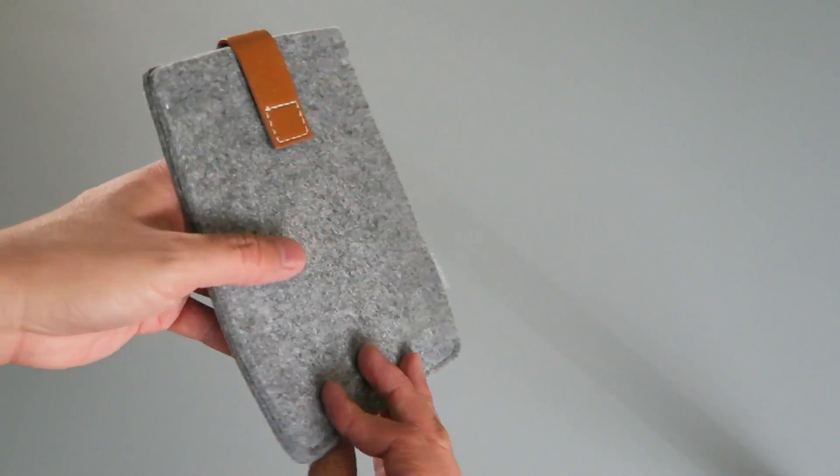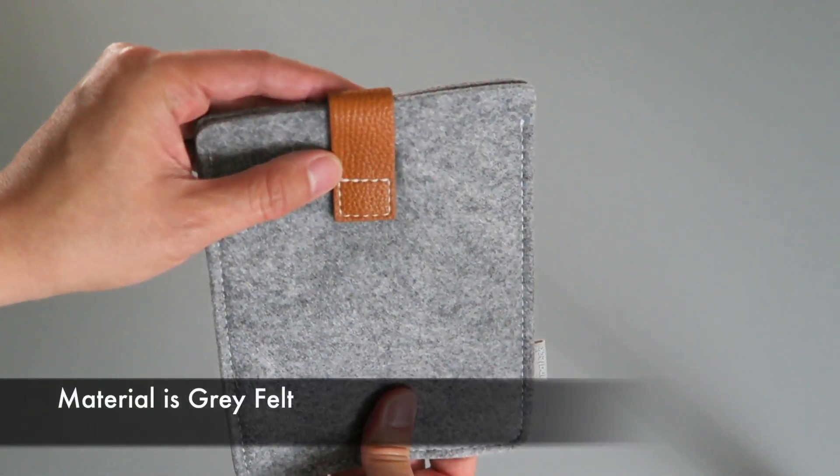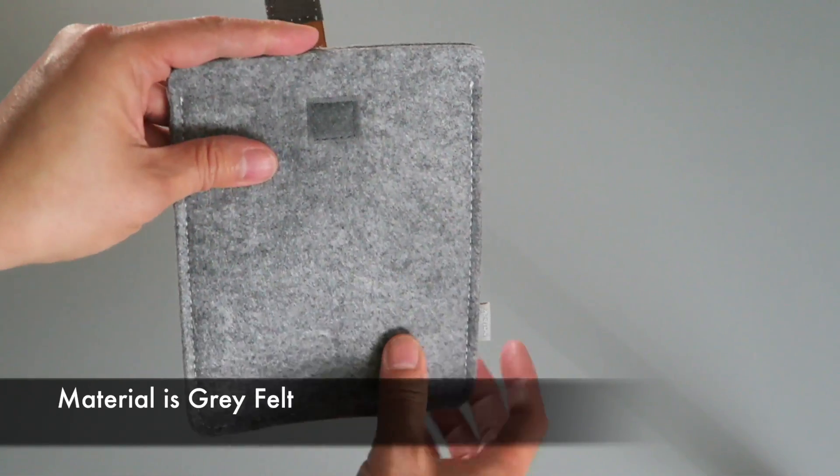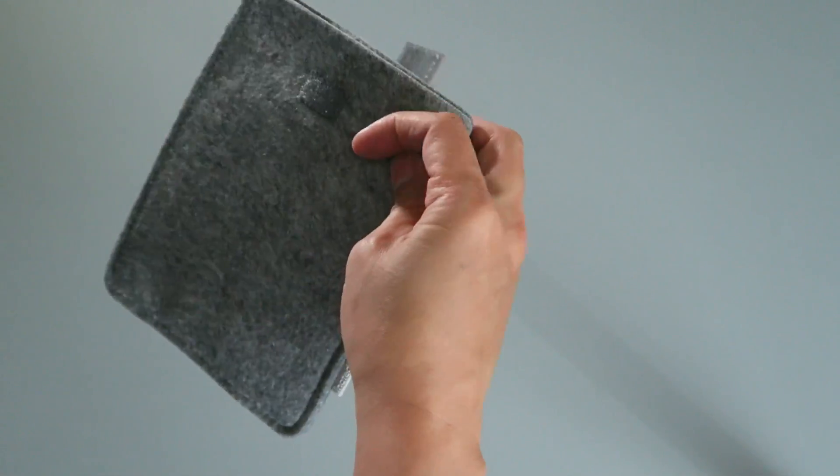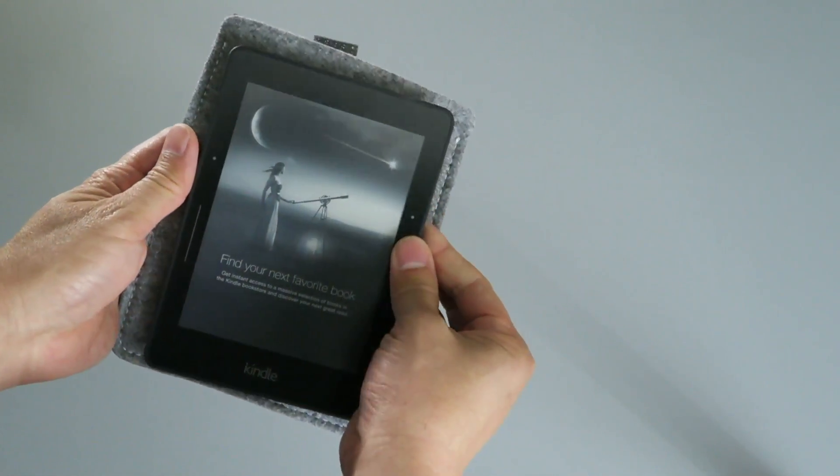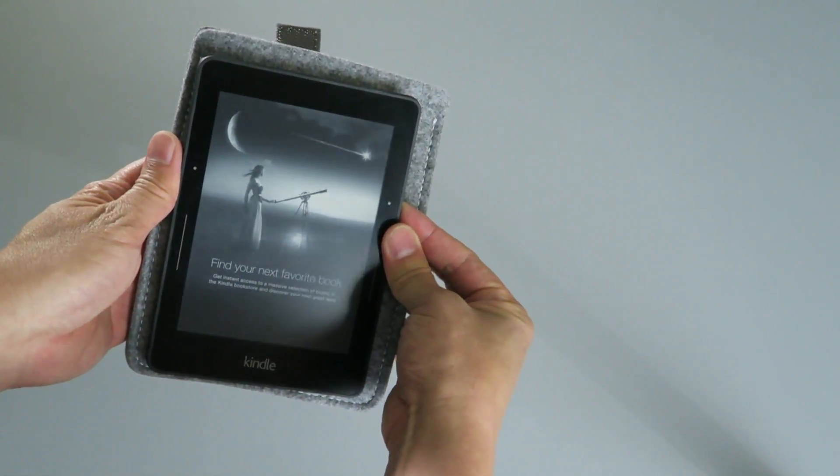They billed this as being environmentally friendly in terms of the material used, as well as sustainable, renewable, and biodegradable. And as you can see here, it has an opening on the top, so it's a slip cover, and it fits the Kindle Voyage quite well.